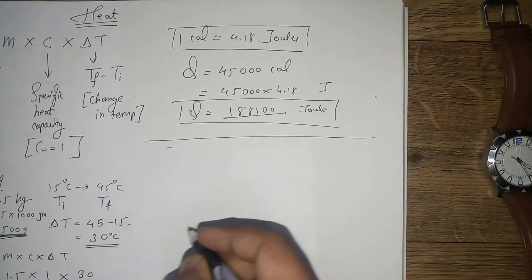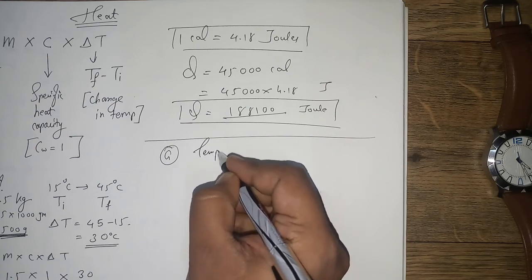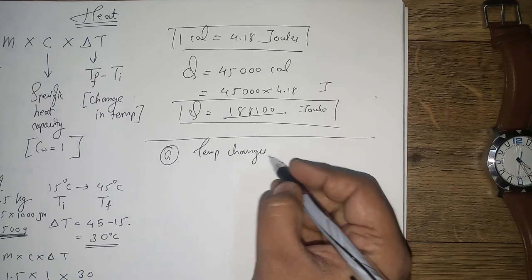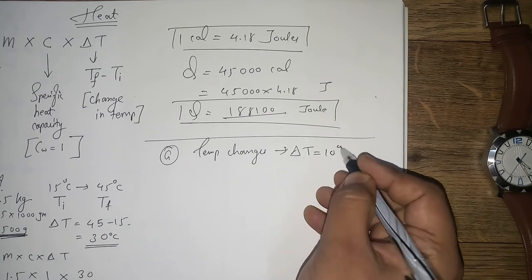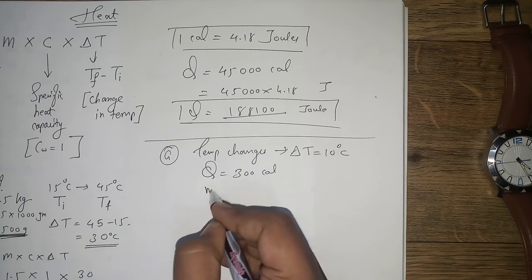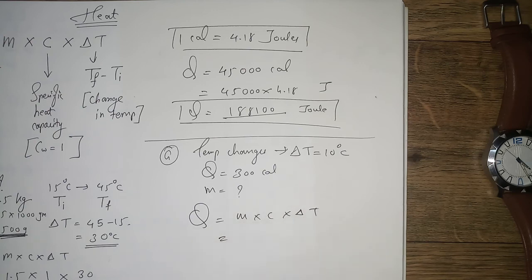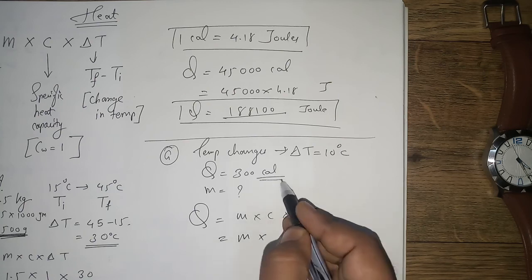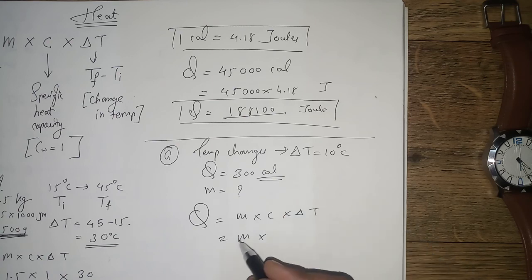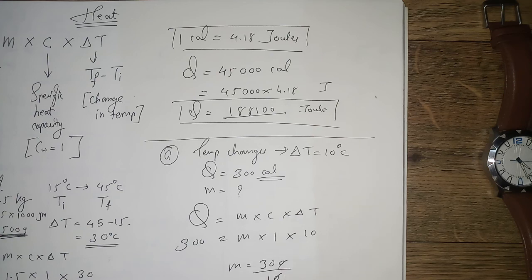Next problem: if the temperature of water changes by 10 degrees Celsius on giving 300 calories, what is the mass of water? Put the formula: Q equals m times c times delta T. So 300 equals m times 1 times 10. Therefore m equals 300 divided by 10, which equals 30 grams.